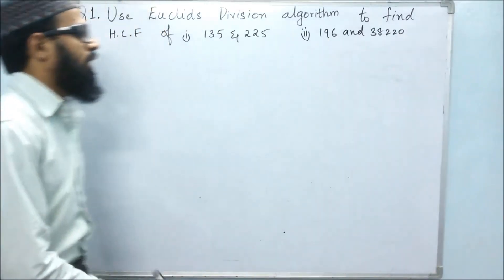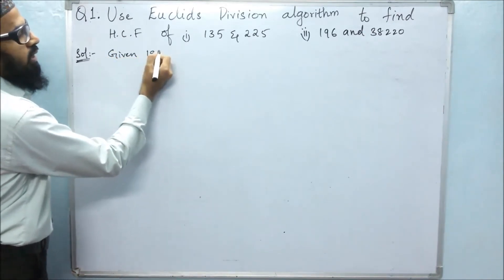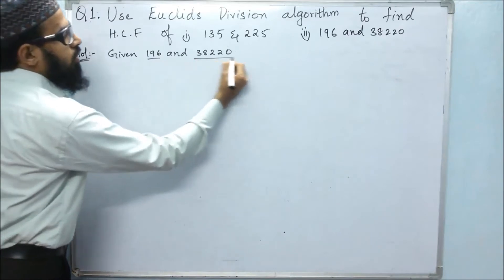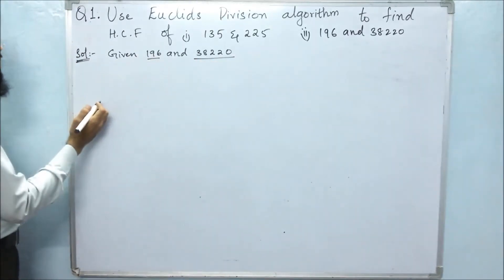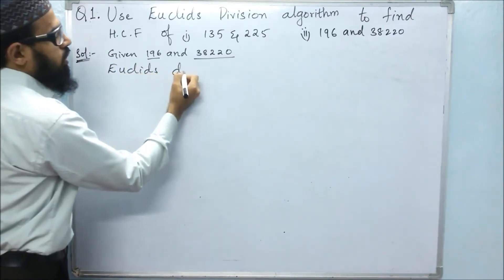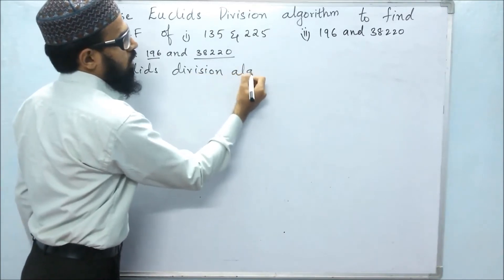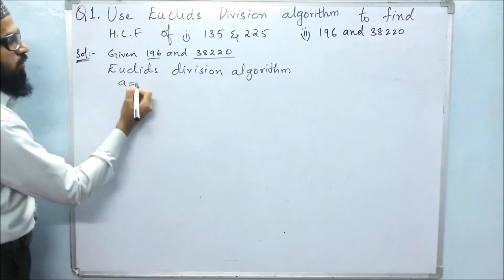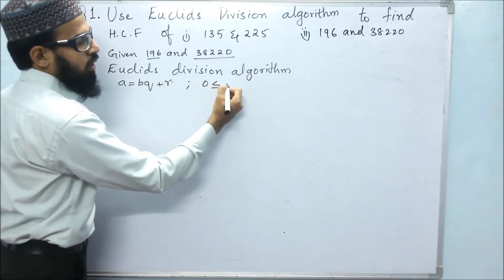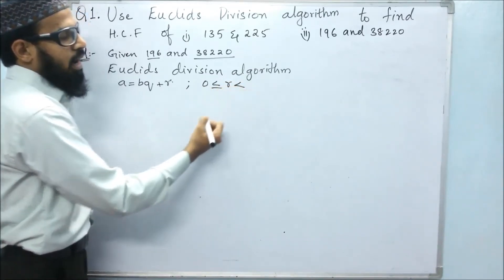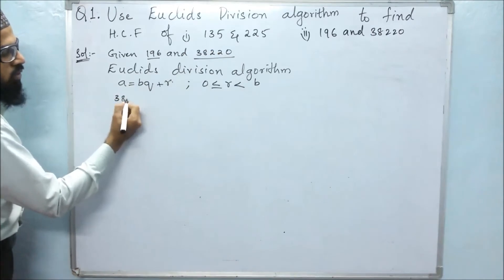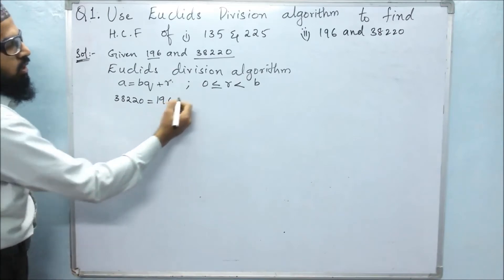Let us solve the second problem. The given numbers are 196 and 38,220. Since 38,220 is greater than 196, we use Euclid's division algorithm: A equals BQ plus R, where 0 is less than or equal to R and R is less than B. We write the bigger number in place of A, so 38,220 equals 196 into Q.